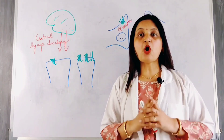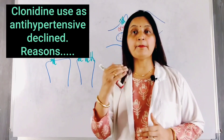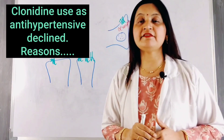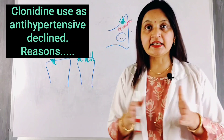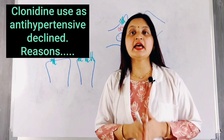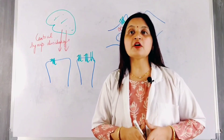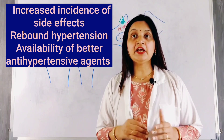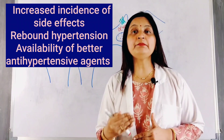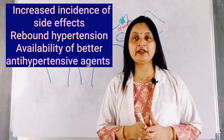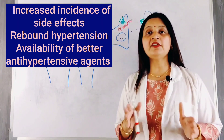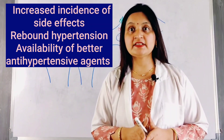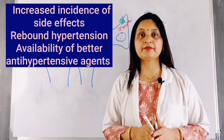Although clonidine helps in lowering blood pressure, its use as an antihypertensive agent has declined over the years. This is because of the increased incidence of adverse effects, rebound hypertension associated with clonidine, and the availability of other antihypertensive agents that are better tolerated.